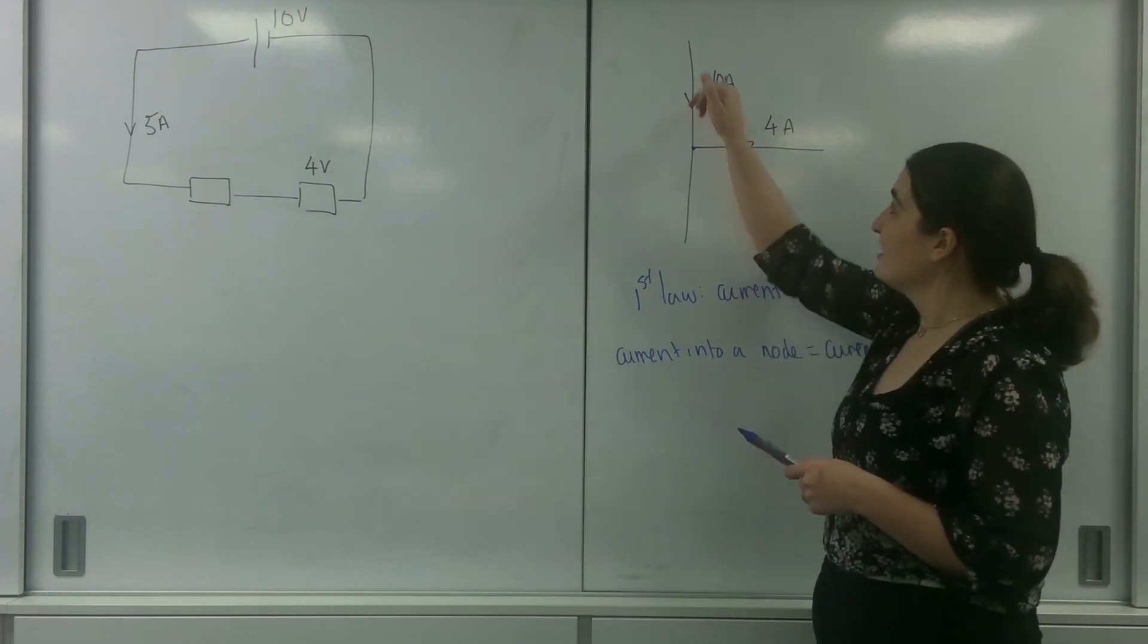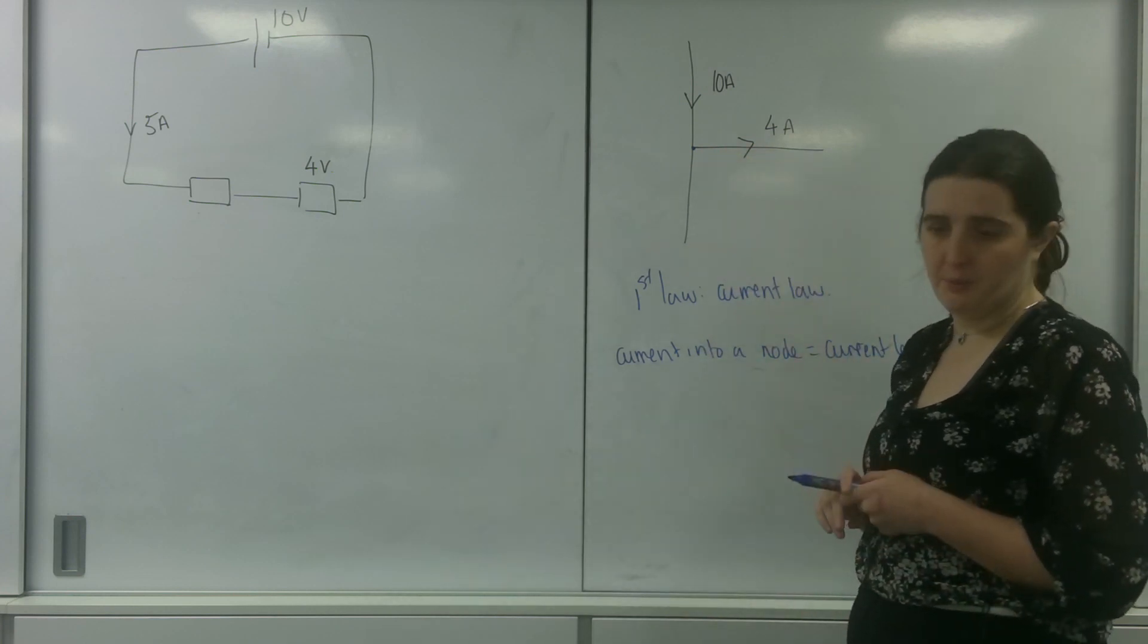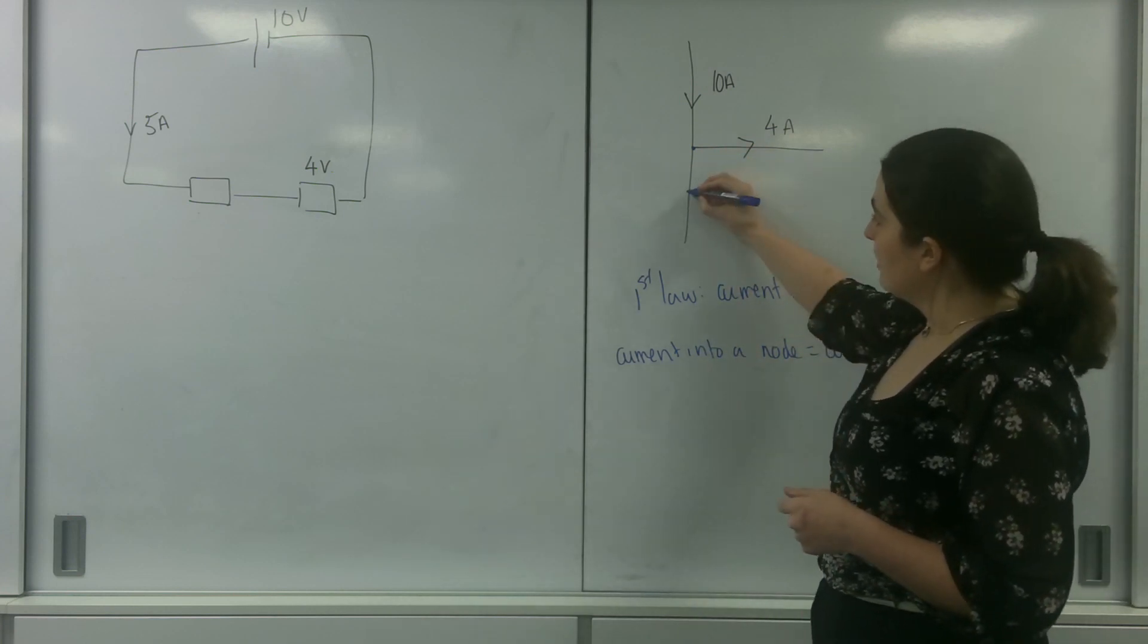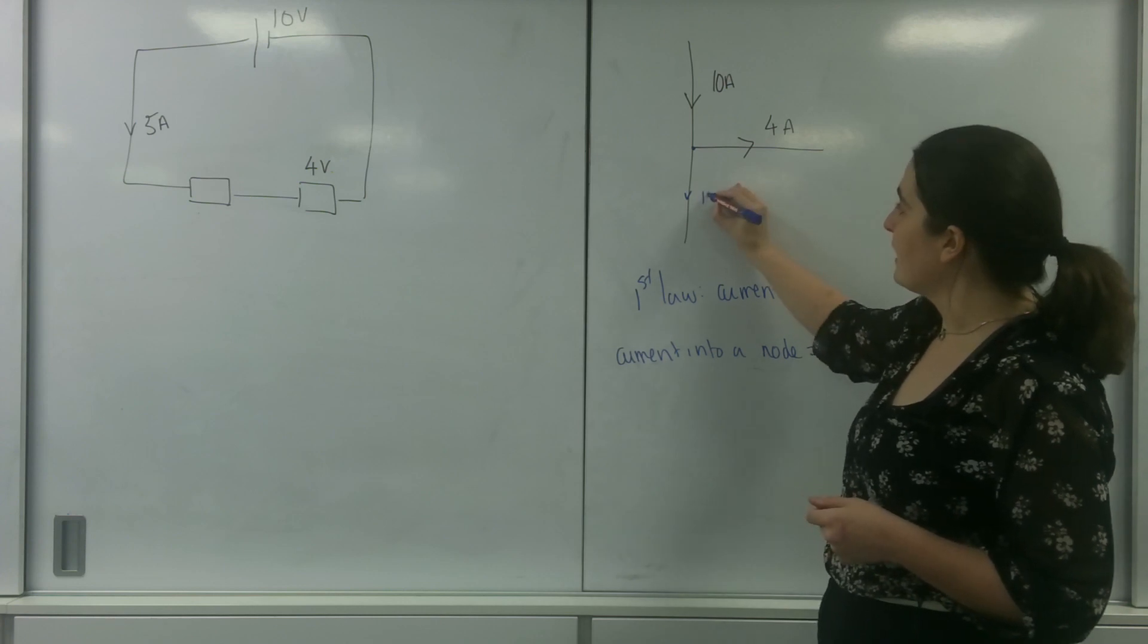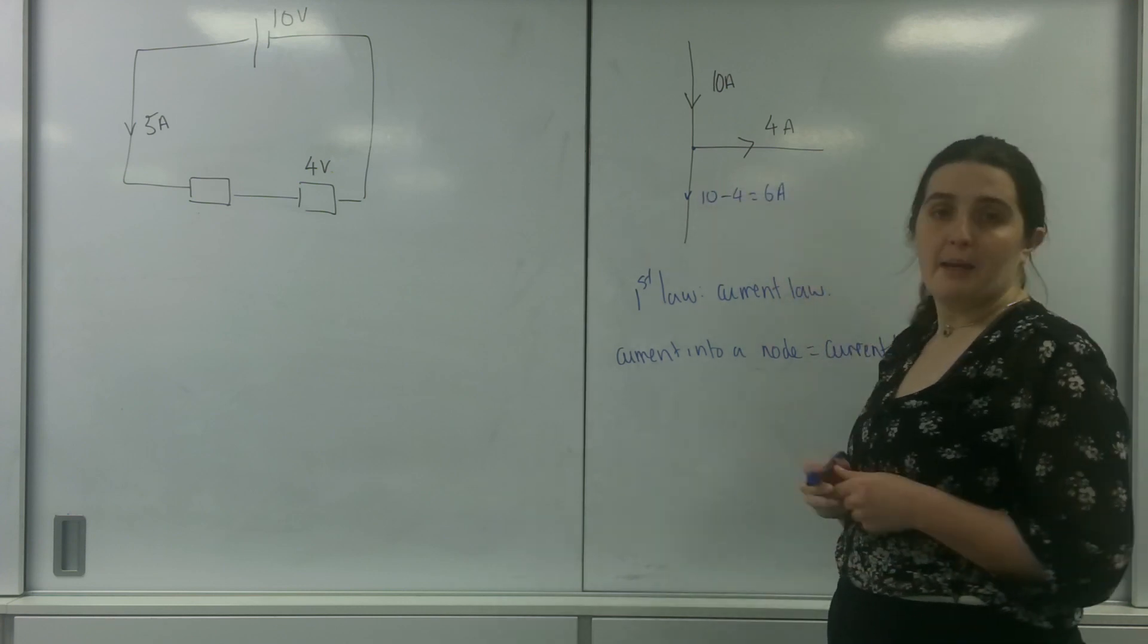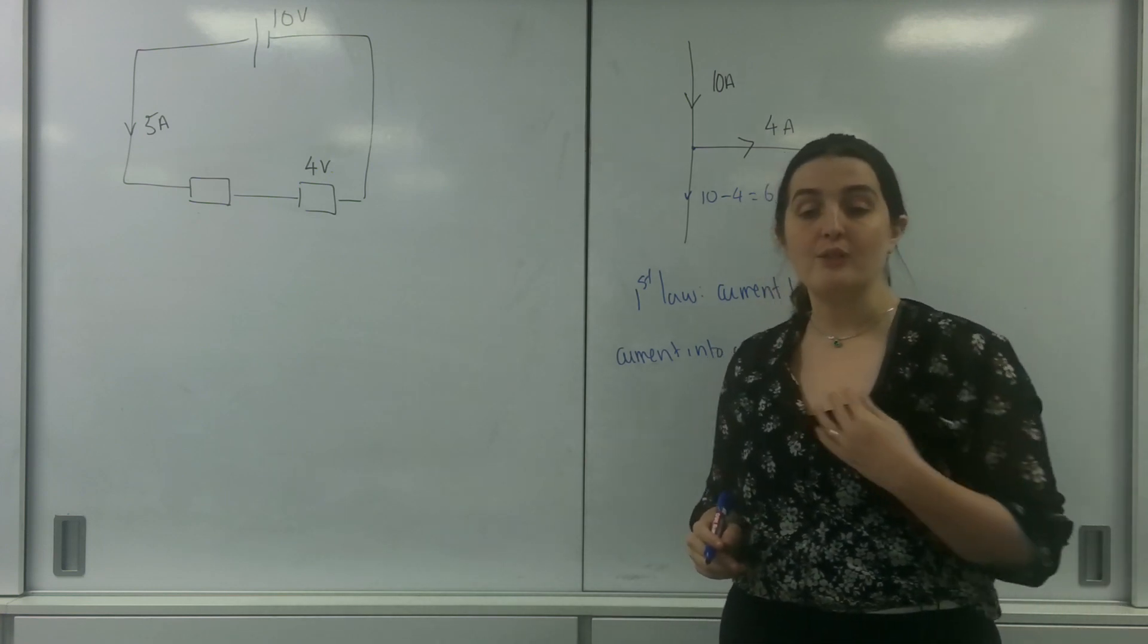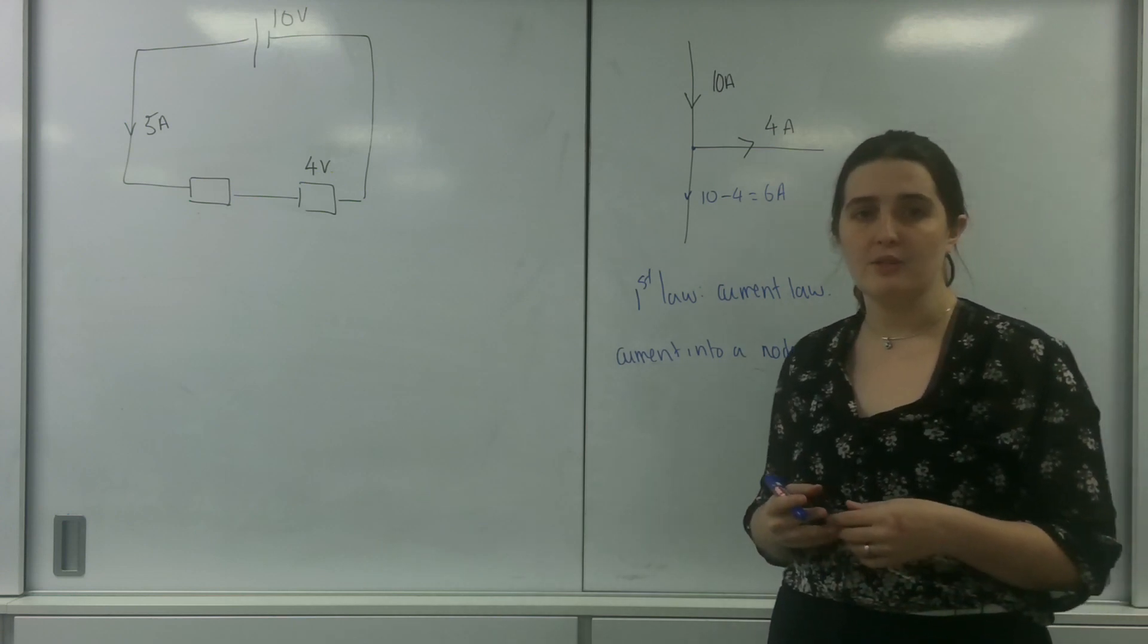So in this case, 10 amps is going into this node. 4 amps is going this way, which means coming out here must be 10 take away 4, which is 6 amps. And this kind of thinking, this Kirchhoff's first law, is really useful for parallel circuits.